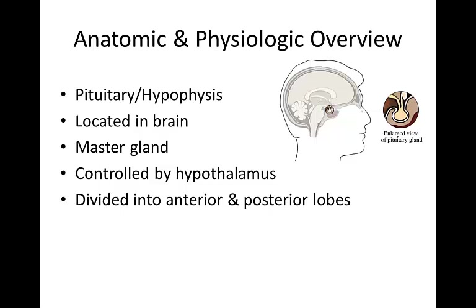The pituitary gland is divided into the anterior and posterior lobes. Abnormalities of pituitary function are caused by over-secretion or under-secretion of any of the hormones produced or released by the gland. Abnormalities of the anterior and posterior portions of the gland may occur independently.